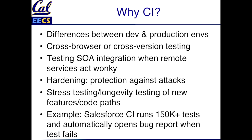A concrete example: there was a talk a couple of years ago at a workshop I ran where a guy from Salesforce talked about their CI process. When they push new code to master on Salesforce, they run over 150,000 tests. And if any of them fail, they have a system that automatically opens a bug report assigned to whoever did the push that included the code that made the test fail. So it's quite automated.